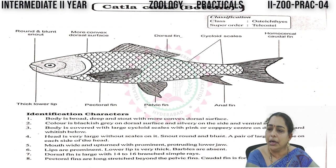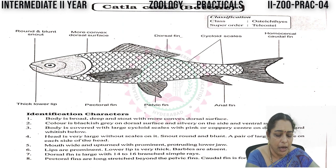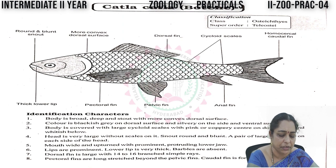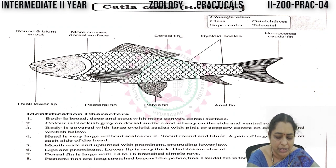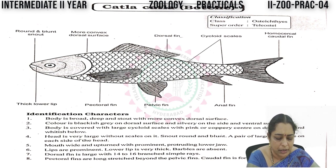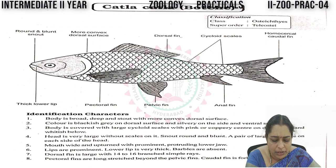Next, let us see the external characters of this fish and the most important identification characters. The body is broad, deep, with a more convex dorsal surface. It has a broad deep snout — with the help of this snout only we can identify the Katla katla or bocche chepa. The color is blackish grey on the dorsal surface and silvery on the sides and ventral surface. The body is covered by large cycloid scales with pink or coppery center on the dorsal side and whitish below the abdomen.